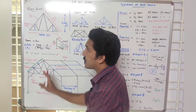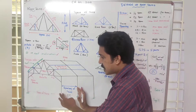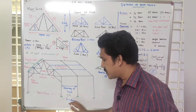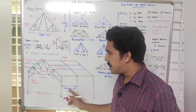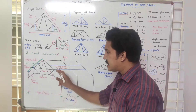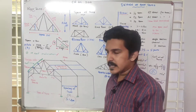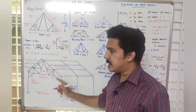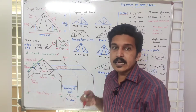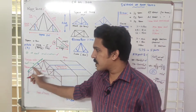The span of the truss and the spacing of the trusses are two important parameters. The spacing of trusses determines the span of the purlins.